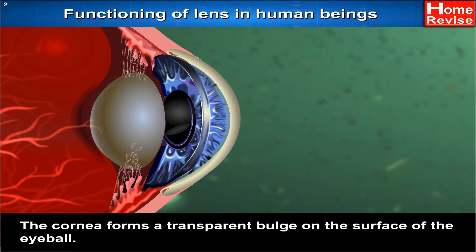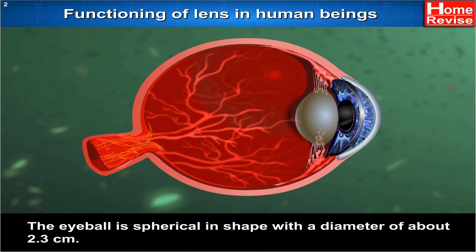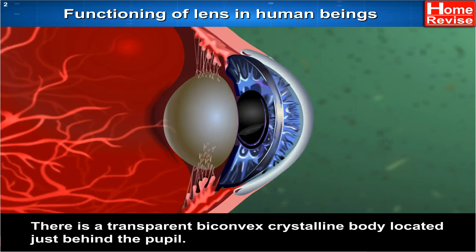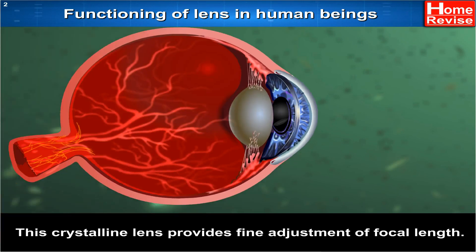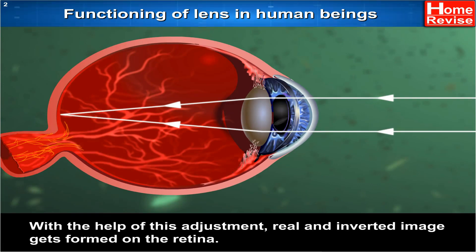The cornea forms a transparent bulge on the surface of the eyeball. The eyeball is spherical in shape with a diameter of about 2.3 cm. There is a transparent, biconvex, crystalline body located just behind the pupil — it is the lens. This crystalline lens provides fine adjustment of focal length. With the help of this adjustment, a real and inverted image gets formed on the retina.